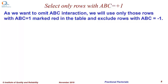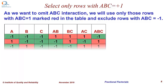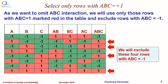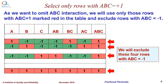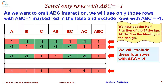Therefore, we will use only those rows with ABC equal to plus 1, which are marked red in the table, and exclude rows with ABC equal to minus 1. We omit these four rows with ABC equal to minus 1. We now get a half fraction of the original 2 to the power 3 design. ABC equal to plus 1 is the identity of the design of these four runs, and we can call this 2 raised to 3 minus 1, or half fraction of the 2 raised to 3 design.